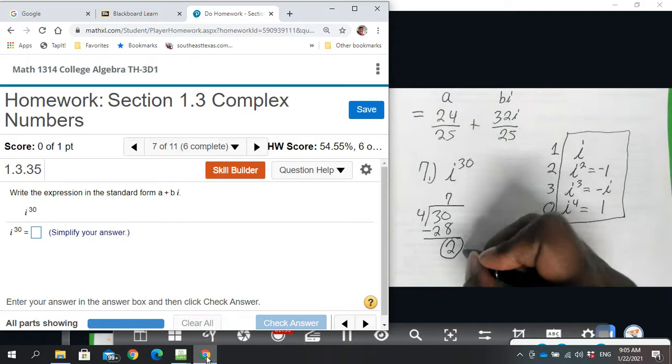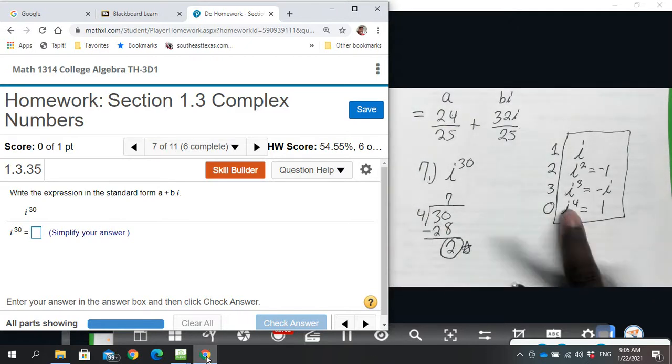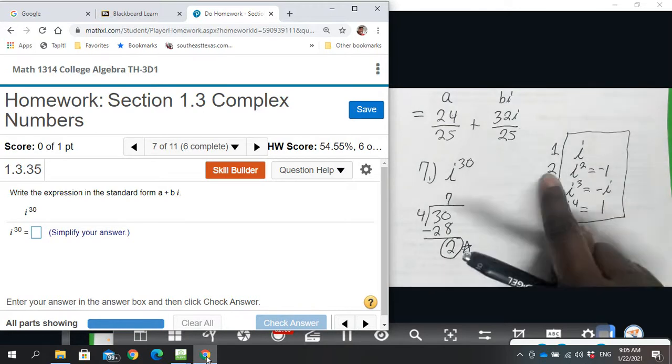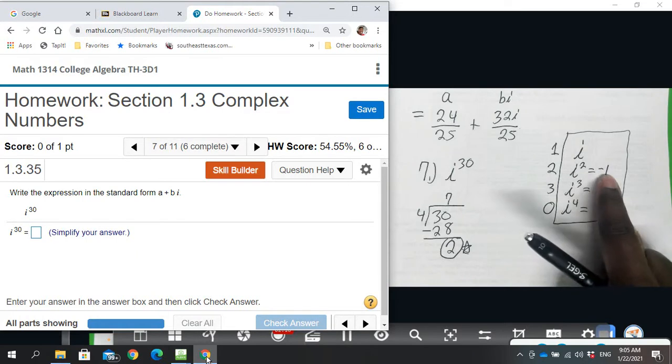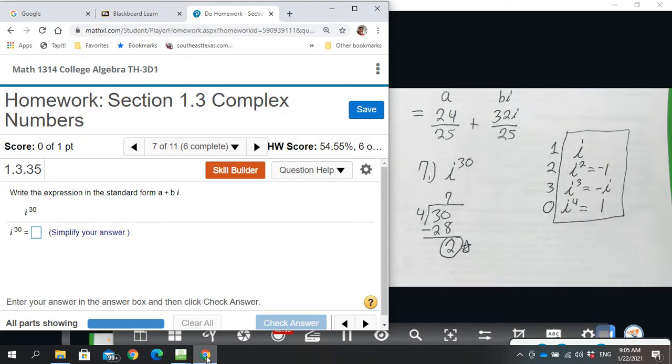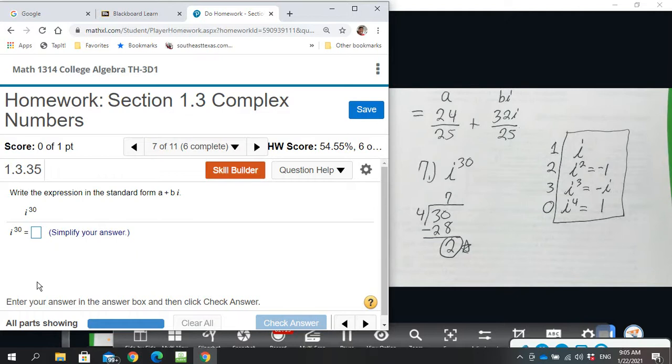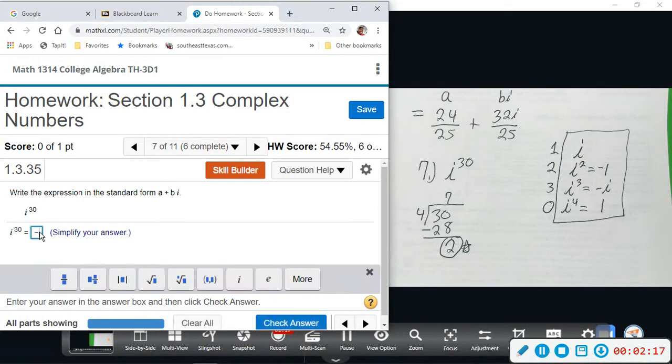So this is your power of i. This is your magic number that we're looking for. You just divide evenly, so it goes in there seven times and then we have two remaining. So since we have two remaining, that's equivalent to i squared, which is equivalent to negative one. And we'll do another one like this just to drive that point home.